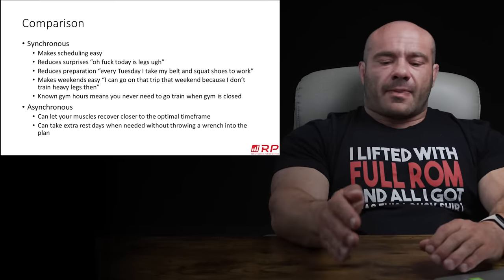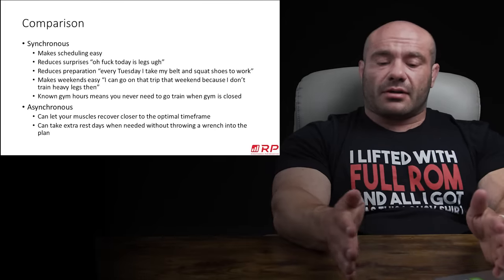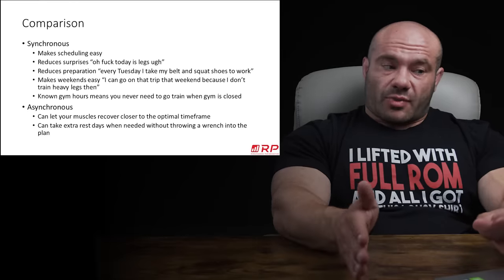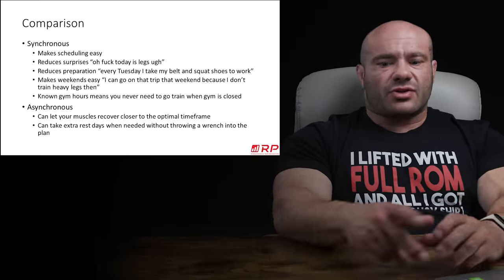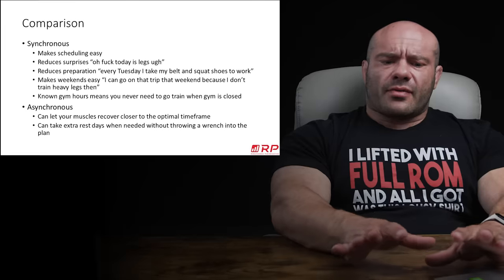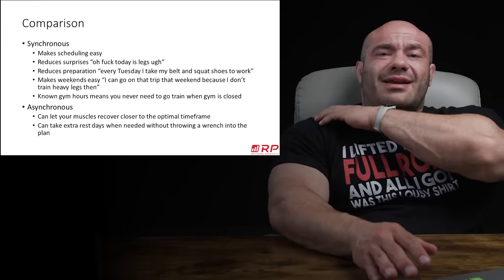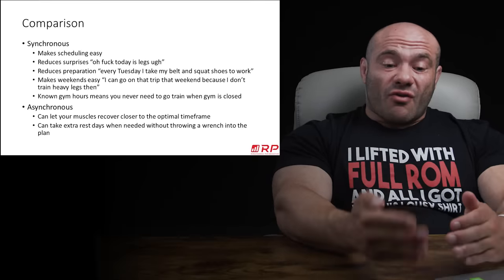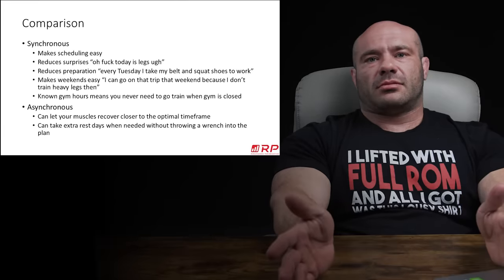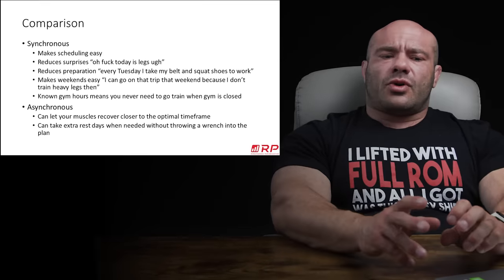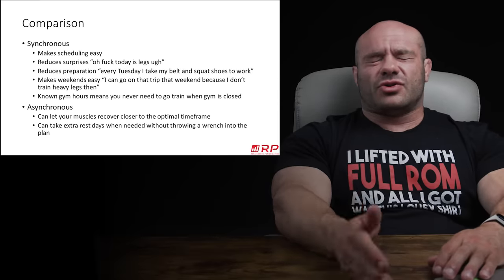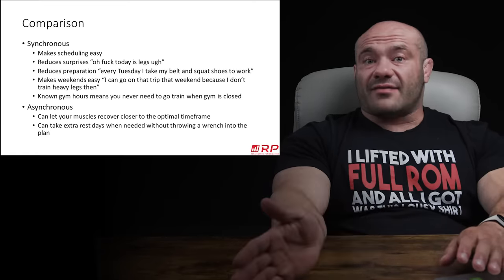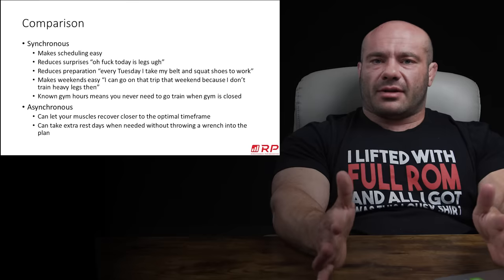There are a few ways to align for optimal recovery on an asynchronous split. One, you can reduce rest days if you recovered early and go early. Two, you can take an extra rest day or a few when needed without wrecking the whole plan — you just restart where you left off. Three, by picking and choosing when you train, you can build an asynchronous split that really aligns with muscle recovery. For example, if you train hamstrings hard, there's no way to have two hard sessions in a week — you get too sore. On a five-day rotation, you can train hams hard every five days, and that's all good workouts. It can align better to optimum recovery.